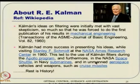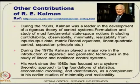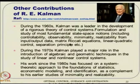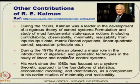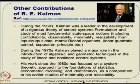During the 1960s, Kalman was a leader in the development of rigorous theory based on controllability, observability, minimality, realizability, matrix Riccati equations, linear quadratic control, and the separation principle — all very path-breaking ideas. In the 1970s, he played a major role in introducing algebraic and geometric techniques in the study of linear and nonlinear control systems. In the 1980s, he focused on different ideas in economic modeling, identification, and related topics. He has received several major awards including the IEEE Medal of Honor in 1974, IEEE Centennial Medal in 1984, the Kyoto Prize, the American Mathematical Society Steele Prize in 1987, the Richard Bellman Control Heritage Award in 1997, the Charles Stark Draper Prize from the National Academy of Engineering, and the National Medal of Science in 2009 from the US president.